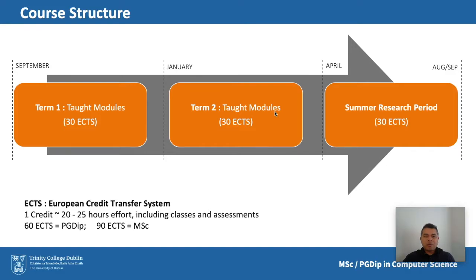The structure of the MSc program over a full calendar year: Term 1 and Term 2 are taught in a traditional sense with timetable classes, lectures, labs, each culminating in an exam period. Semester 1 starts in September and ends around December; Semester 2 starts in January, ending roughly around April. The summer period between April and August is dedicated to the research component, where students work independently on an individual research project. Each of these three components is worth 30 ECTS credits, where each credit is equivalent to about 20 to 25 hours of work.